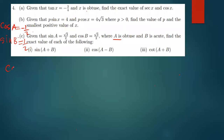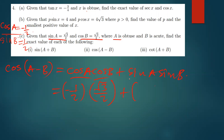For cos(A minus B), the compound angle formula gives cos A cos B plus sin A sin B. Substituting: negative 1/2 times root 3 over 2 gives negative root 3 over 4. Then root 3 over 2 times 1 over 2 gives root 3 over 4. Adding these: negative root 3 over 4 plus root 3 over 4 equals 0.